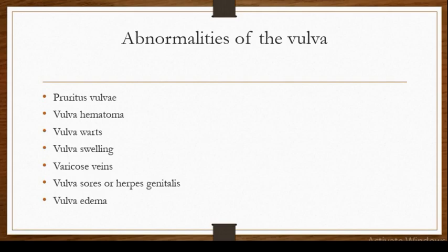Over here we have some abnormalities which may be found — there are a lot of them, but we outline these simple few ones for now. We may find pruritus vulva, vulva hematoma, vulva swelling, varicose veins of the vulva, vulva sores or herpes genitalis, and vulva edema. We are going to talk about two of them in this video; the subsequent ones will be covered in new videos yet to come.